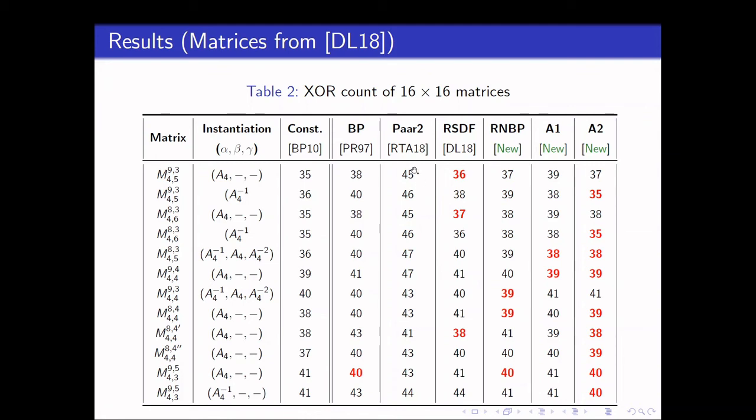As for the other algorithms, the RSDF refers to a randomized version of the shortest distance first algorithm. RMBP refers to the randomized BP algorithm. A1 and A2 are introduced as before. So we can see that over here, A2 has been getting the lowest XOR count compared to other algorithms for most of the matrices. Note that this table actually shows the XOR count for the 16x16 matrices.